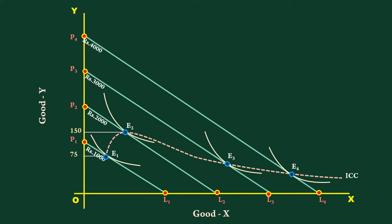Beyond that, he reduces his purchase of good Y. He buys 50 units and 25 units respectively at income levels 3000 and 4000 rupees. Beyond income 2000 rupees, the income consumption curve slopes downward towards Y axis.